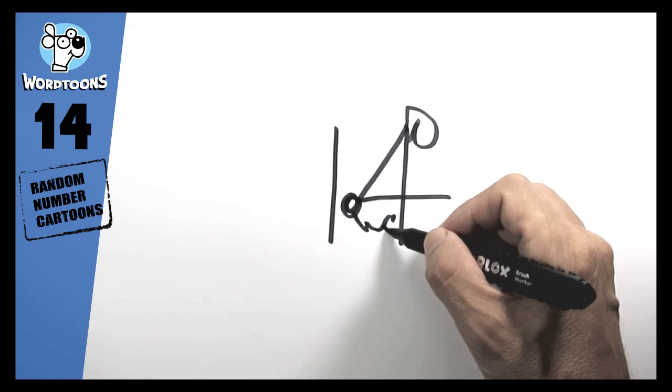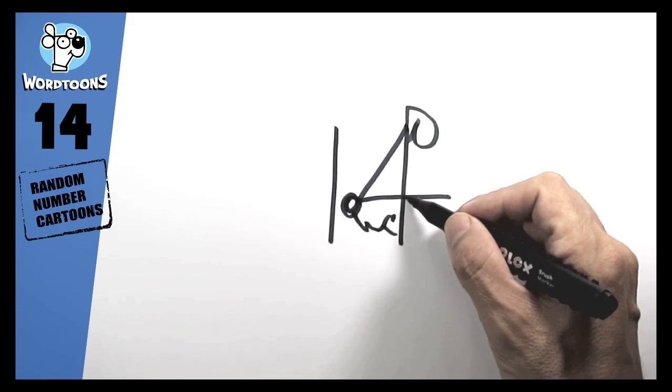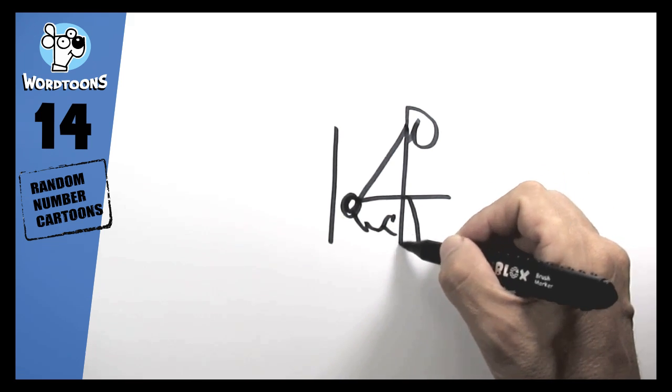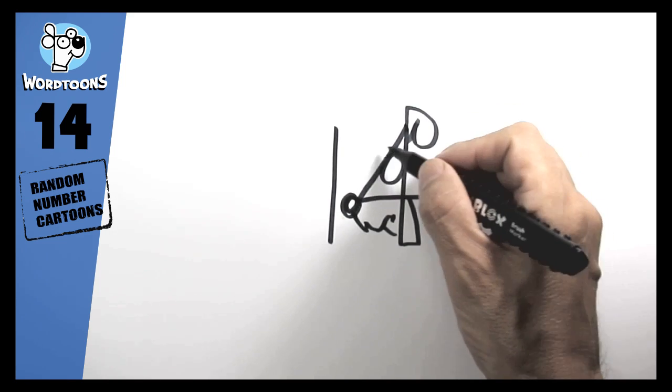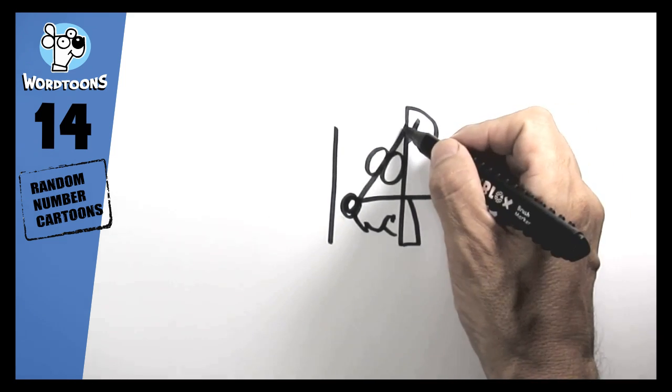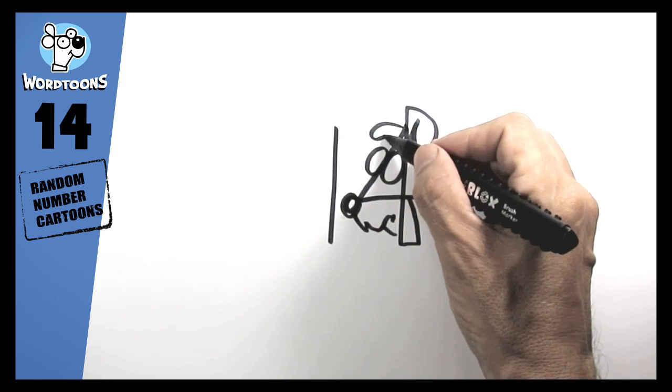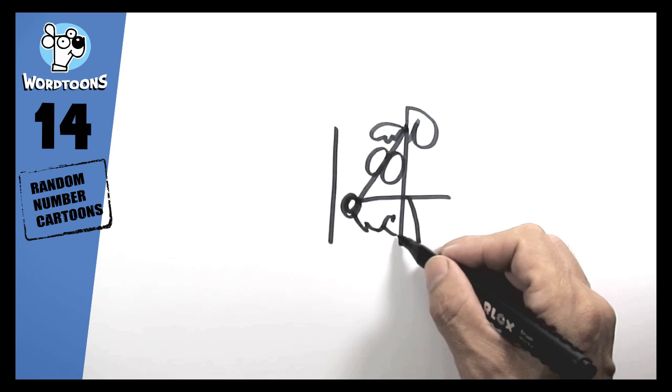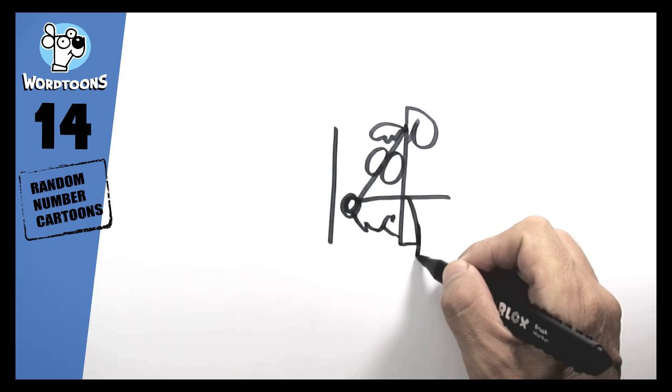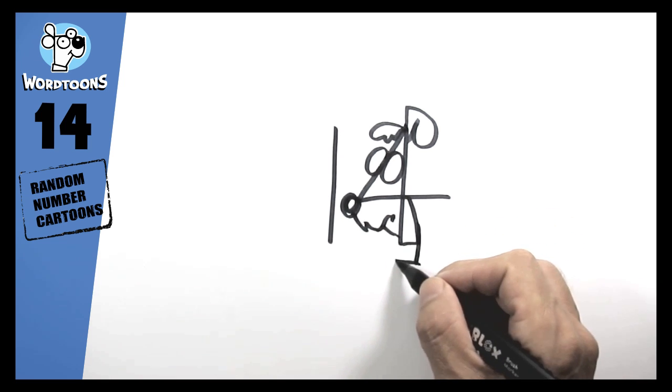There we go. A bit of a collar. There it is. And a little scruffy here. Now, why am I drawing a dog out of the number 14?